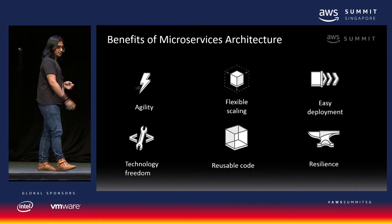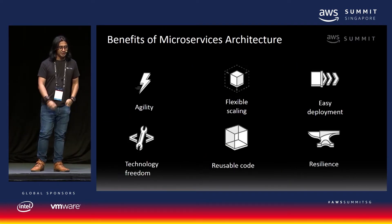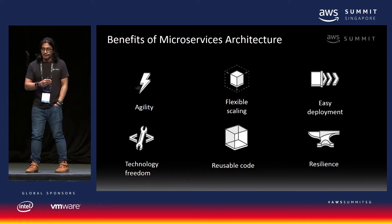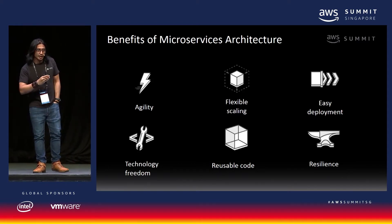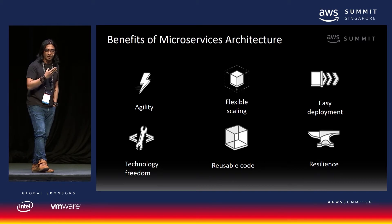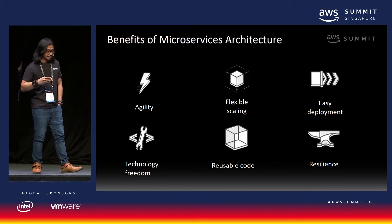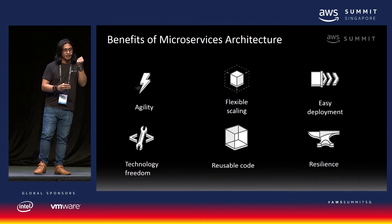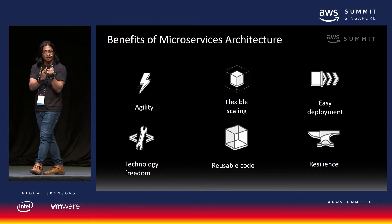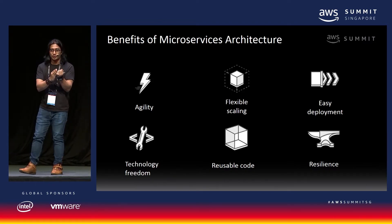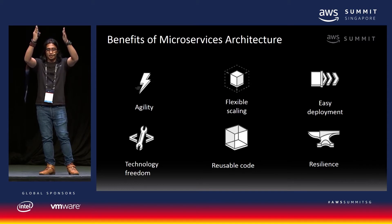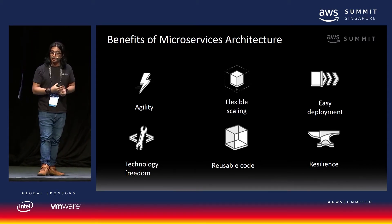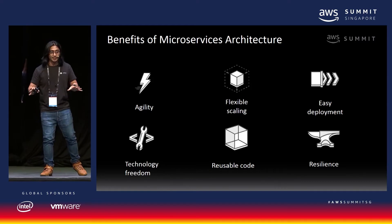The benefits of having microservice architecture include agility — you can create new features for your applications. It also offers flexible scaling because with one microservice, you can scale only that particular microservice without having to scale the entire large block application. And it's easy to deploy because it's independent.